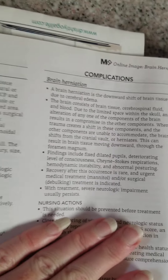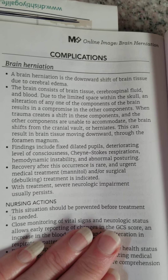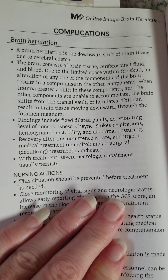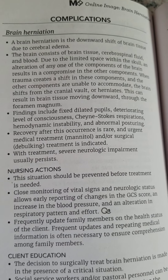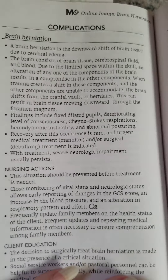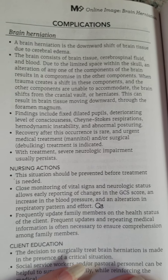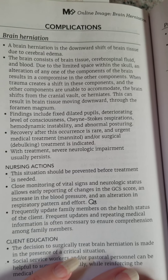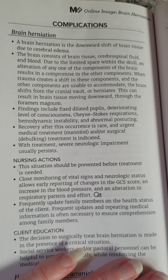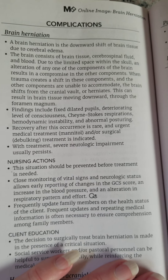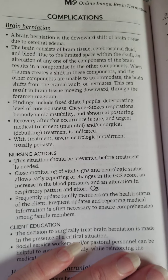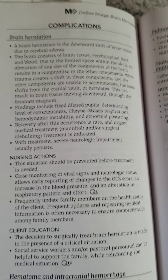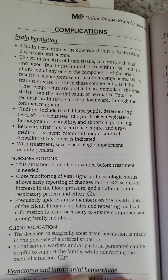A complication that can occur is brain herniation. Brain herniation is the downward shift of brain tissue due to cerebral edema. The brain consists of brain tissue, cerebrospinal fluid, and blood. Due to the limited space within the skull, an alteration of any one of the components results in a compromise in the other components. When trauma creates a shift and the other components are unable to accommodate, the brain herniates and can shift downward through the foramen magnum.